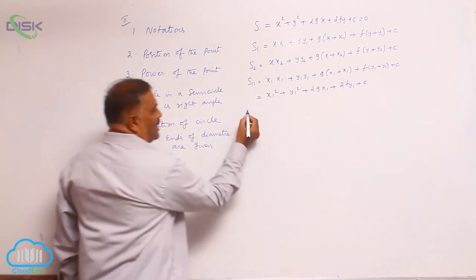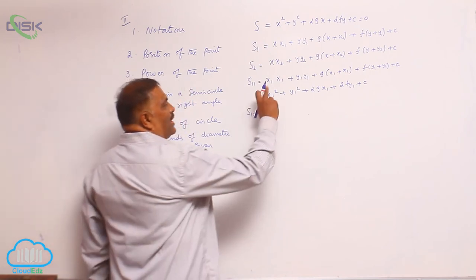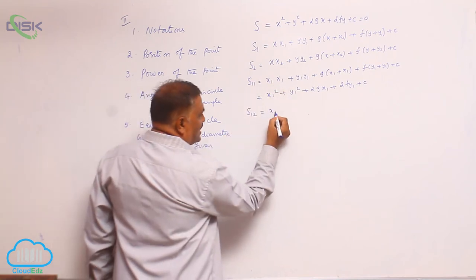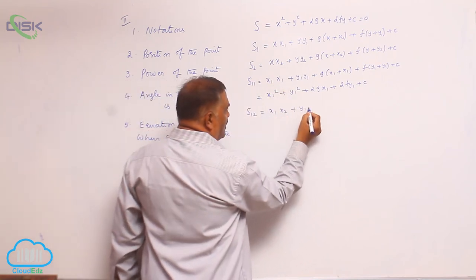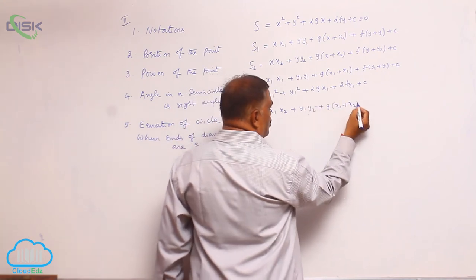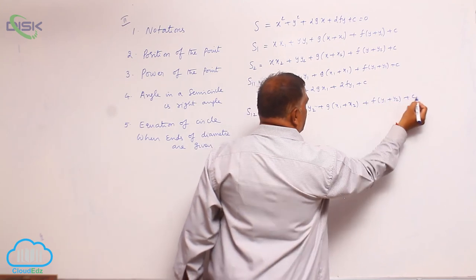In the same fashion, you can write S₁₂. Instead of writing 1,1 let us write 1,2. That is x₁·x₂ + y₁·y₂ + g(x₁ + x₂) + f(y₁ + y₂) + c.